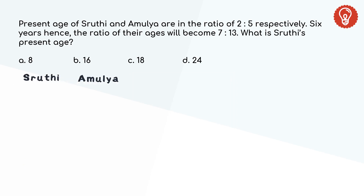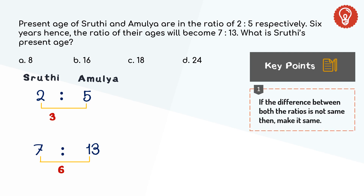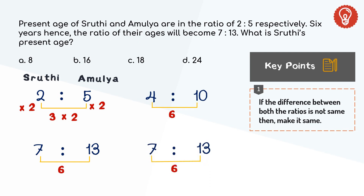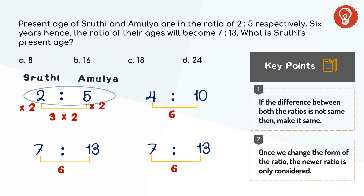Shruti and Amulya's present ages are in the ratio 2 to 5. After 6 years, the ratio of their ages is 7 to 13. Like always, check the difference between the ratios. Difference between 2 and 5 is 3, and difference between 7 and 13 is 6 — the difference is not the same, so we need to make it the same. Multiplying 3 by 2, the difference will be the same, but we need to multiply the ratio as well. Then the ratio becomes 4 to 10. Now the difference between 4 and 10 is 6, and between 7 and 13 is also 6. Once we change the form of the ratio, 2 to 5 is not considered anymore.